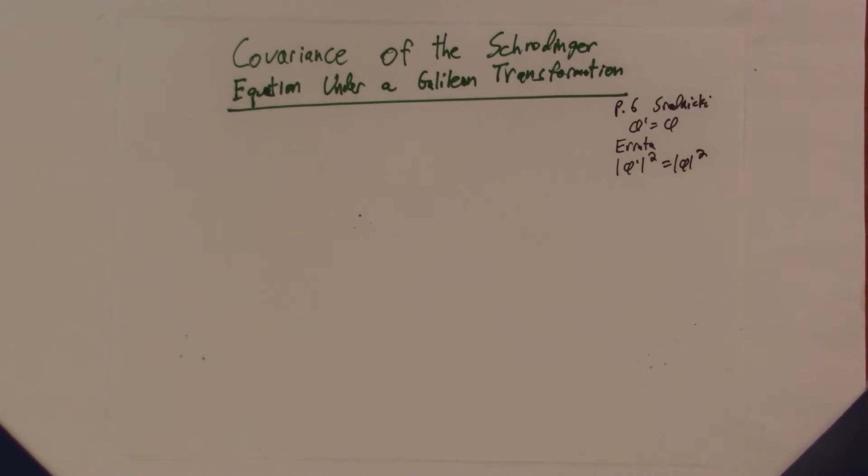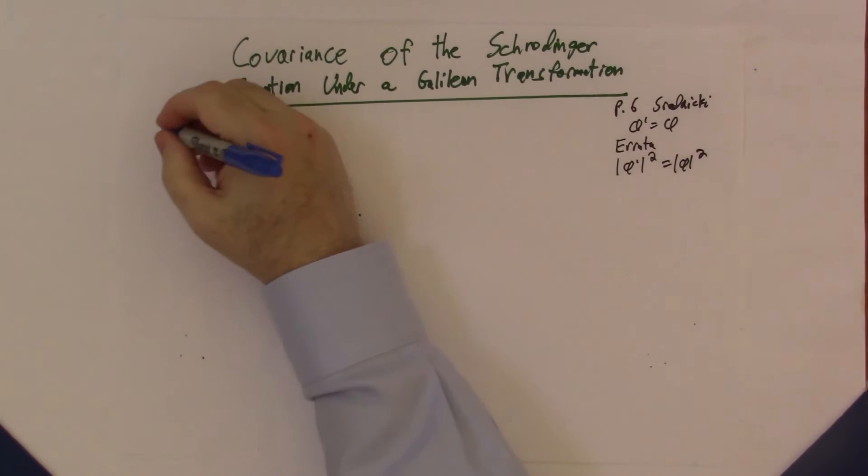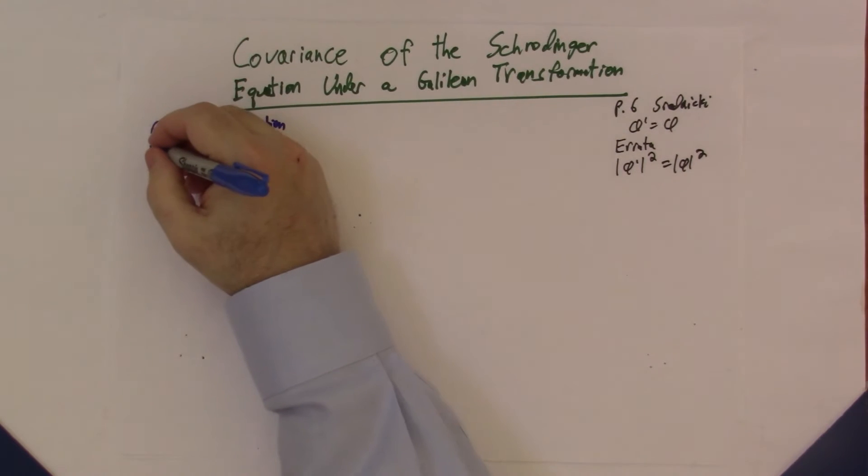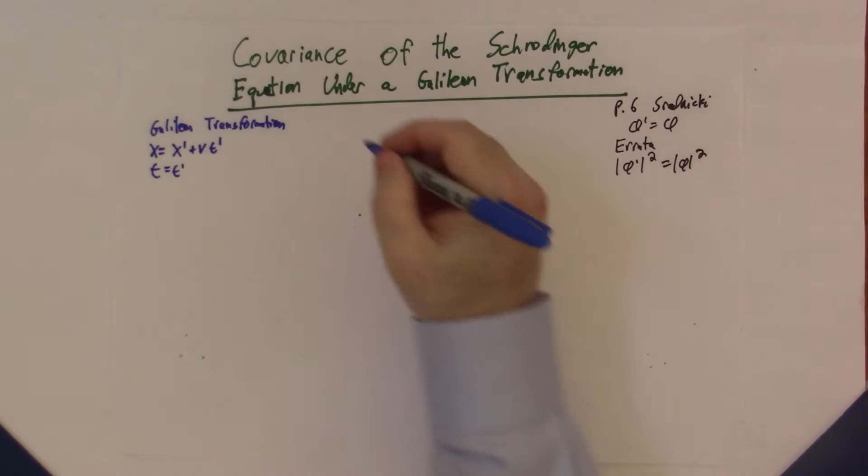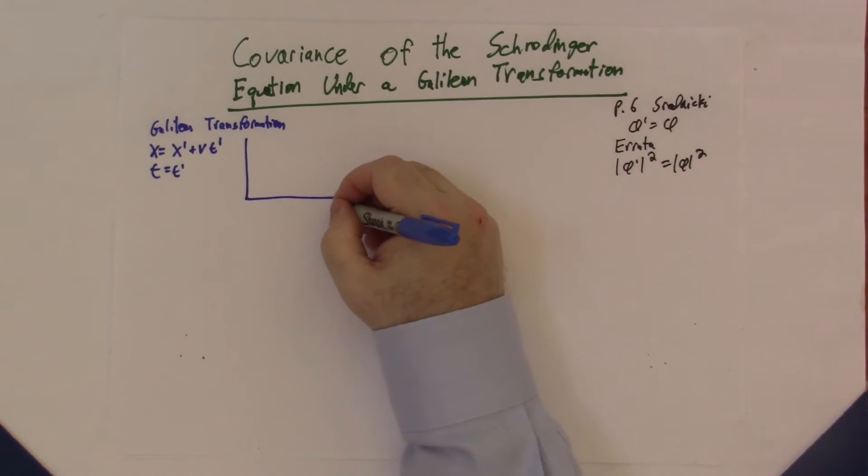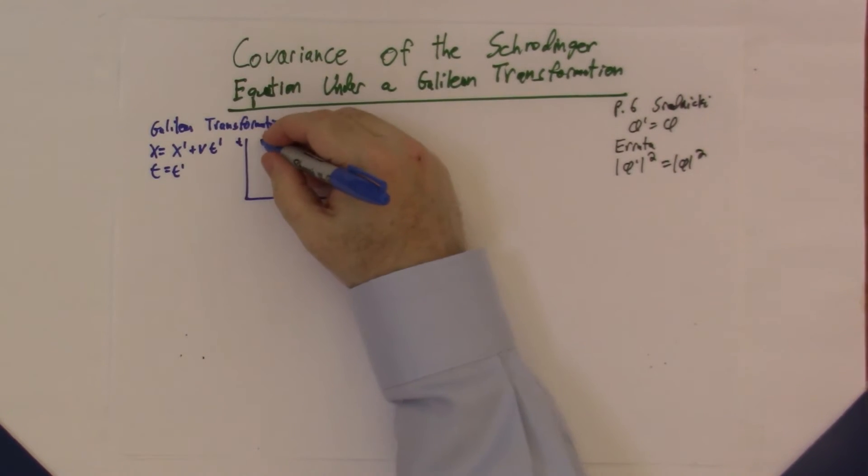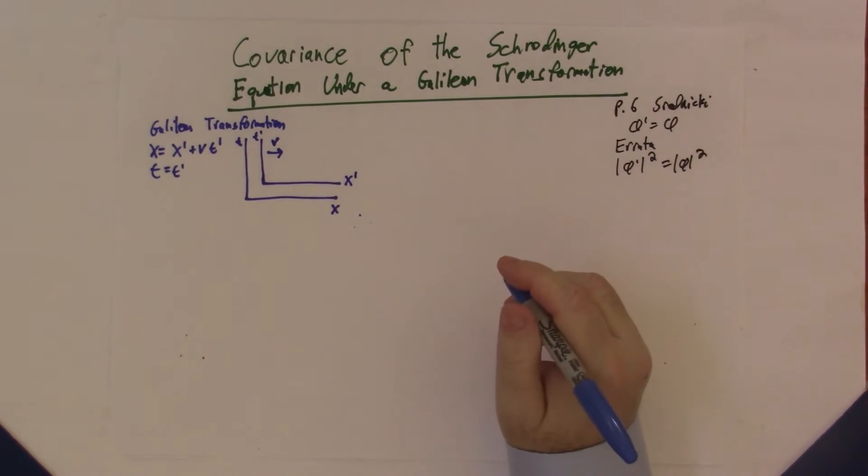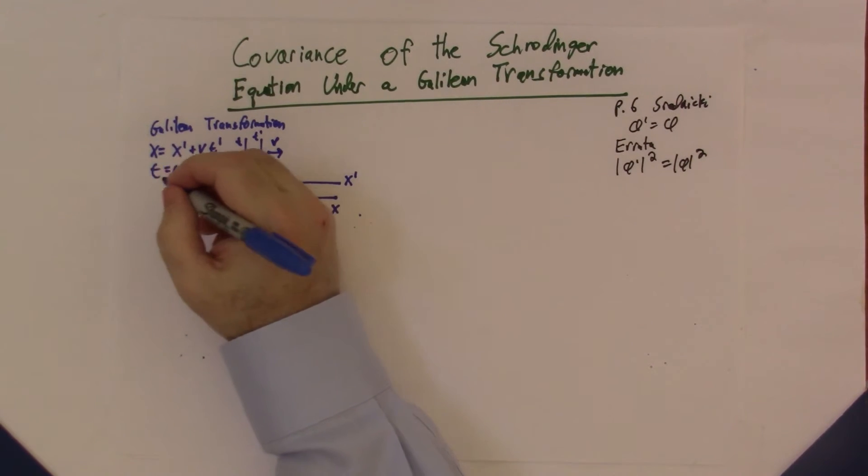So I'd like to start with the Galilean transformation, which is much simpler than a Lorentz transformation, if not as beautiful. As we all know, it's very simply given by x = x' + vt', t = t'. We can see this if we have a reference frame with x and t and we imagine a boosted reference frame with velocity v, labeled with coordinates x' and t'. Just for later use, the inverse transformation is of course very trivial: x' = x - vt and t' = t.